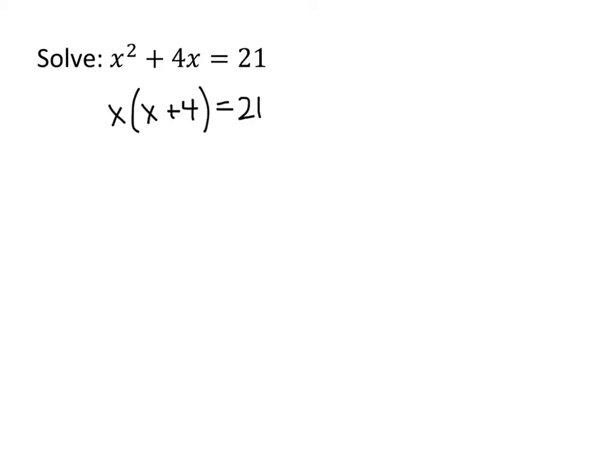But we immediately run into a problem here. 0 had that nice property that there was only one way that we could multiply two numbers together and get 0. But 21, there's a lot of different ways we can multiply numbers together to get 21. 3 times 7, 21 times 1, negative 3 times minus 7. Heck, there's a lot of other options if we start using fractions. So factoring here isn't helpful.